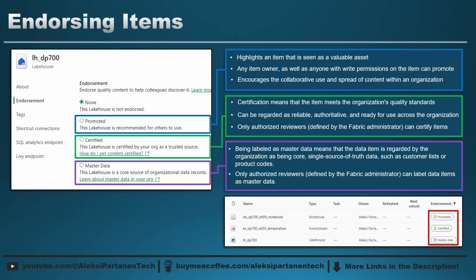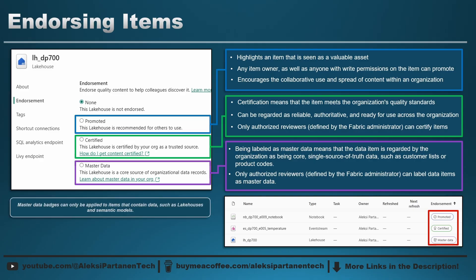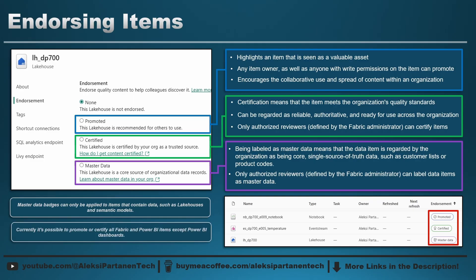A given item can have only one endorsement — so you can't have promoted and certified endorsements at the same time. Also, master data endorsement can only be applied to specific items that contain data, like lakehouses and semantic models. It wouldn't make sense to label a data pipeline or dataflow as master data since those items don't contain data — they just move and transform it. Promoted and certified endorsements can be added to all Fabric and Power BI items except Power BI dashboards.